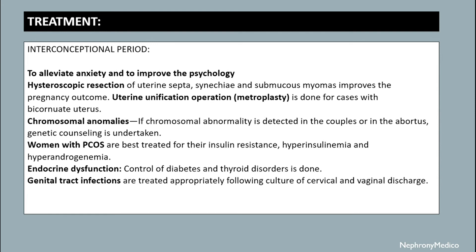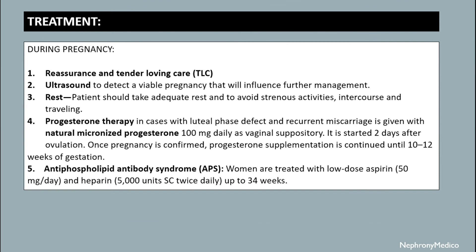If genetic abnormalities are detected in the couple or the abortus, genetic counseling should be done. Women with PCOS should be treated for insulin resistance, hyperinsulinemia, and hyperandrogenemia conditions. Endocrine dysfunction should be treated with control of diabetes and thyroid disorders.